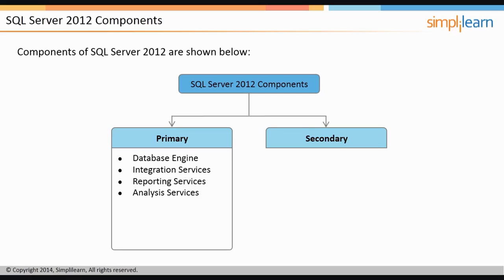Secondary components are ones that provide some additional functionality to the primary components. They could be some sort of tools, services, SDKs, and other modules that enhance the usage of the primary components. While there are many such secondary components, let's take a look at some of them here. We will take a look at many others as we move forward in this course.